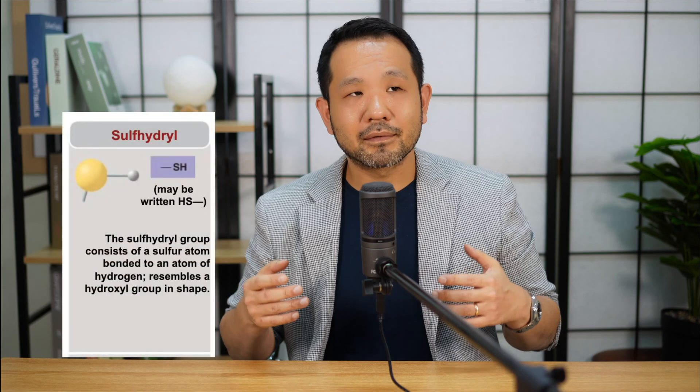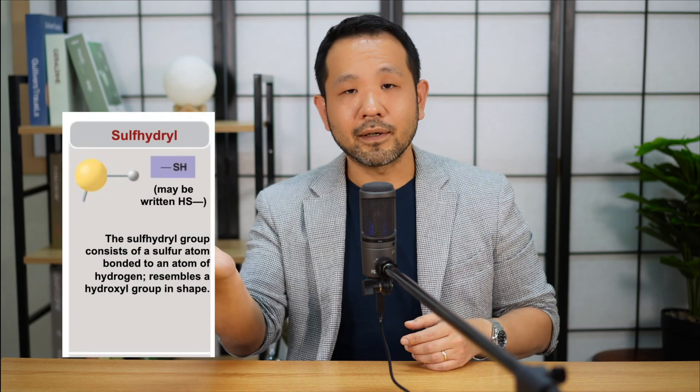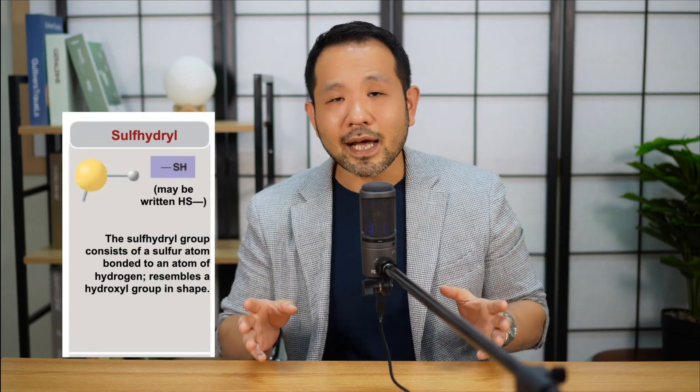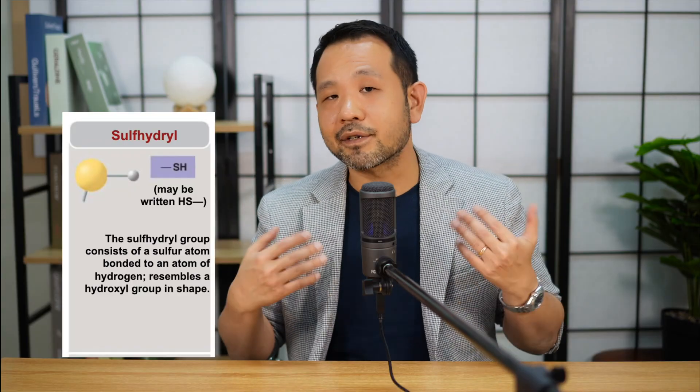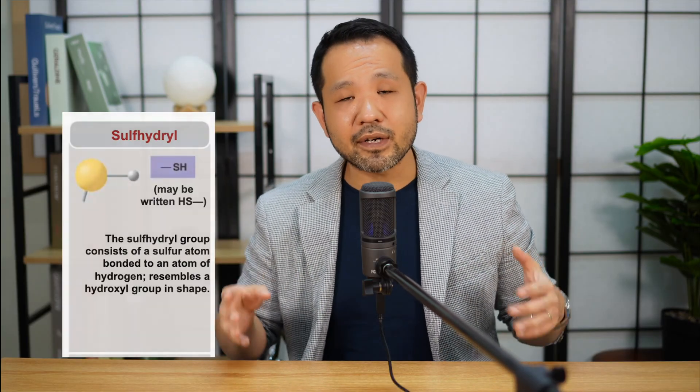The next group is the sulfhydryl group, which as the name suggests includes sulfur and hydrogen. It has a very specific relevance to the amino acid cysteine. You'll really appreciate it in the next chapter when we talk about different levels of protein structure, so for now just know that sulfhydryl groups will come up again in your study of amino acids.